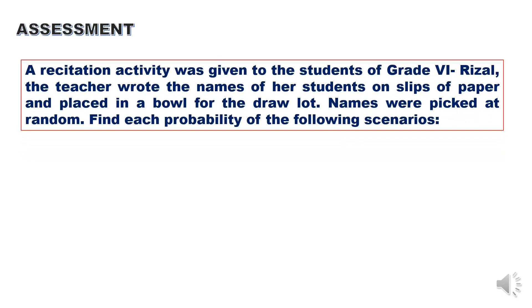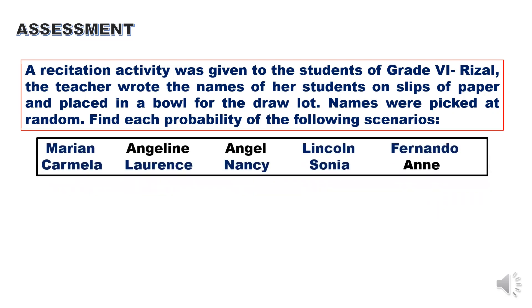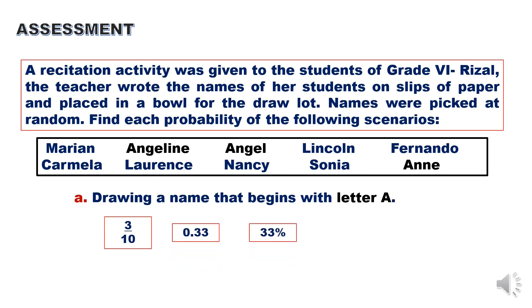Assessment. A recitation activity was given to the students of grade 6 Rizal. The teacher wrote the names of her students on slips of paper and placed in a bowl for the draw lot. Names were picked at random. Find the probability of the following scenarios: Drawing a name that begins with letter A. Those names are Angeline, Angel, and Ann. There are 3 out of 10 names, and that is 0.33 or 33%, and that is unlikely to happen.